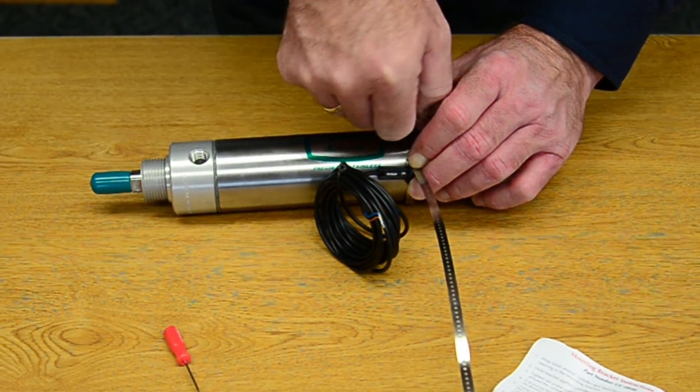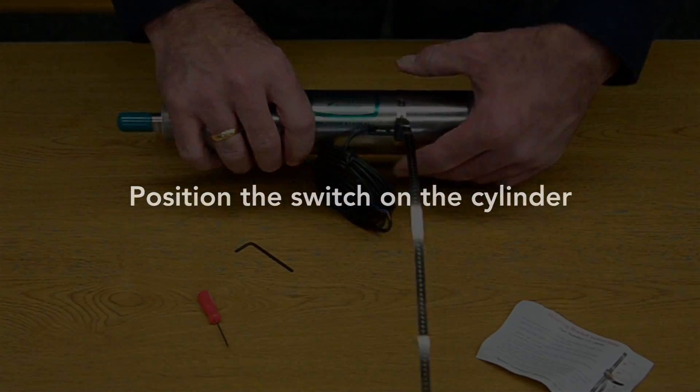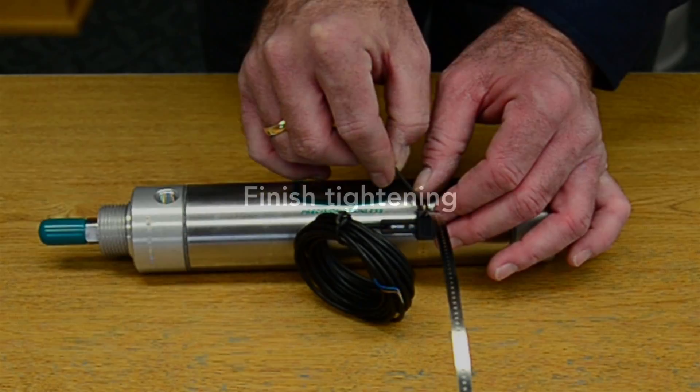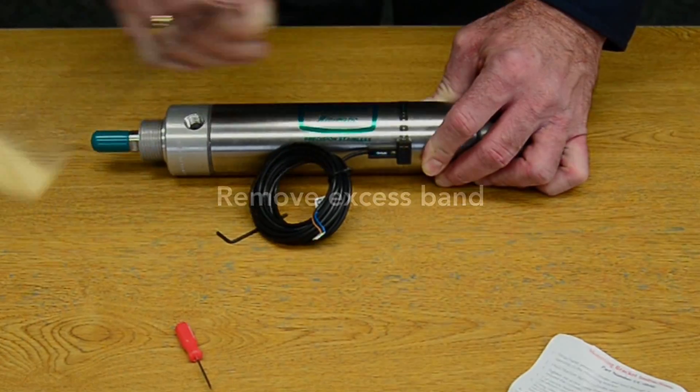Tighten the set screw. Position the switch in place on the cylinder. Finish tightening the set screw. And finally remove the excess band.